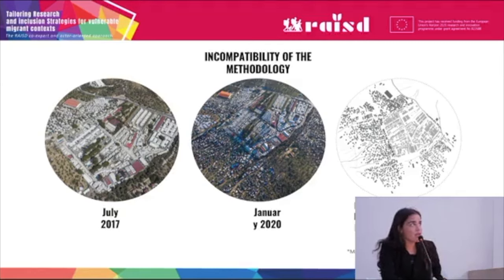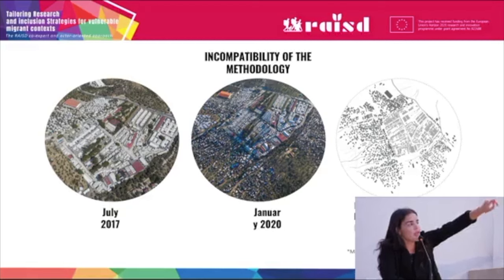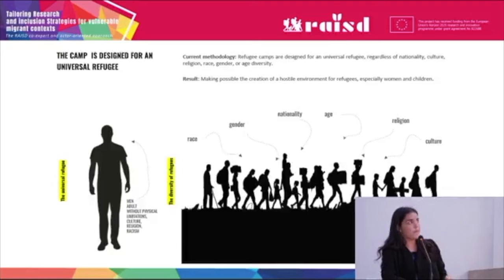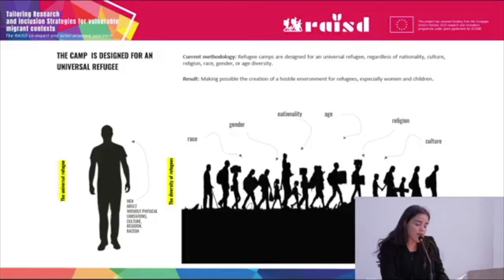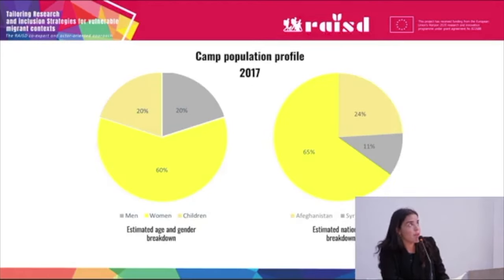As you can see in these two pictures, the first shows the camp, and the second shows the population outside the camp. Refugee camps are designed for a universal refugee, with no consideration of nature, culture, religion, race, gender, or age diversity. This results in a potentially hostile environment for refugees, especially women and children. Here is the camp population profile. As we can see in the graph, the culture of West Asia does not describe Moria's population profile. The population is mostly composed of women and many nationalities.